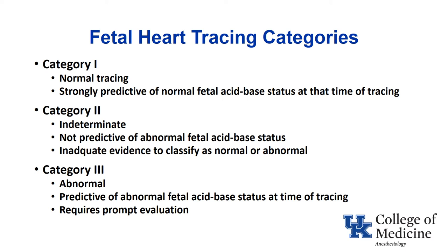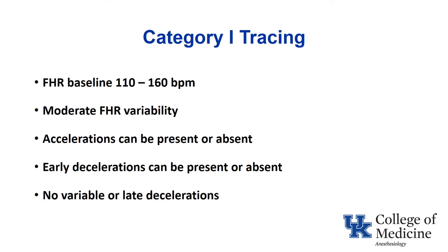Category three is clearly an abnormal tracing — it is predictive of having an abnormal fetal acid-base status and requires prompt evaluation. In many cases it will require prompt delivery; a category three tracing is considered urgent, meaning you want her in the OR within about 30 minutes. A typical category one tracing has a normal fetal heart rate baseline, moderate fetal heart rate variability, and may or may not have accelerations or early decelerations. But if you have any variables or late decelerations, it is automatically no longer a category one tracing.